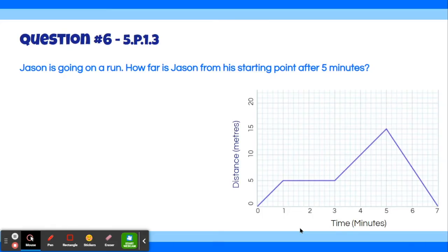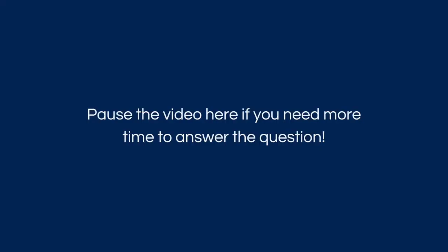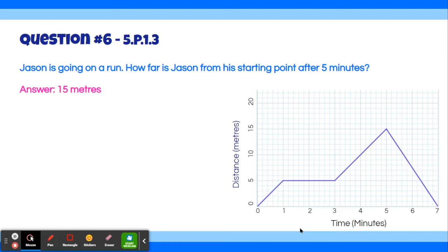Alright, moving on to our next question. Jason is going on a run. How far is Jason from his starting point after 5 minutes? The answer is 15 meters.